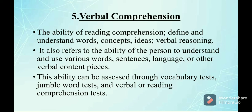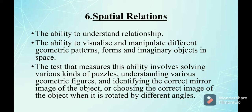The sixth primary mental ability is spatial relations — the ability to visualize and manipulate different geometric patterns, forms, and imaginary objects in space. This ability comes into play when a person tries to understand the manipulation of real or imaginary objects in space. Tests measuring this ability involve solving puzzles, understanding geometric figures, and identifying the correct mirror image or rotated image of an object.